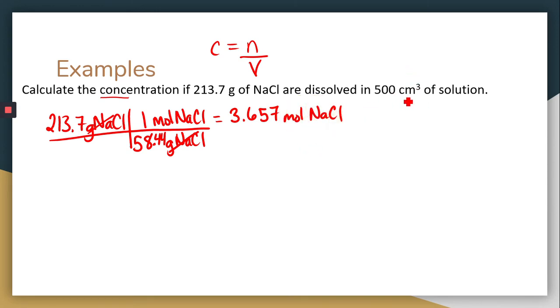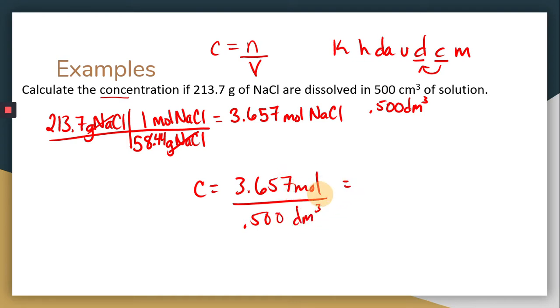Then we need to convert centimeters cubed to decimeters cubed. So remember King Henry died unusually drinking chocolate milk. You're going from centimeters to decimeters, so that's one place to the left. However, it's cubed, so you're going to want to move that three times. So 500 centimeters is 0.500 decimeters cubed. So to find our concentration, we're going to take our moles, and we're going to divide it by decimeters cubed. And we have a concentration of 7.31 moles per decimeters cubed. Notice we're using that negative sign to show that the volume is in the denominator.